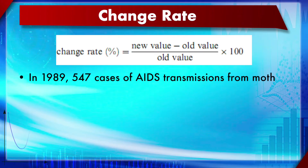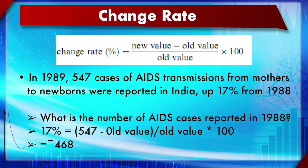Another related term is the change rate: new value minus old value, divided by the old value, multiplied by 100. Example: In 1989, 547 cases of AIDS transmission from mothers to newborns were reported in India, up 17% from 1988 - meaning there was a 17% jump in this transmission mode in just one year.